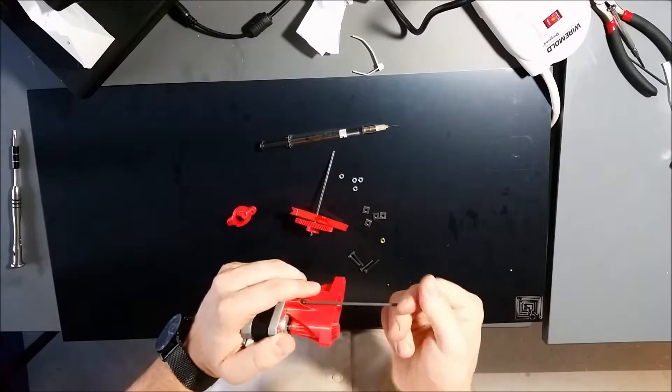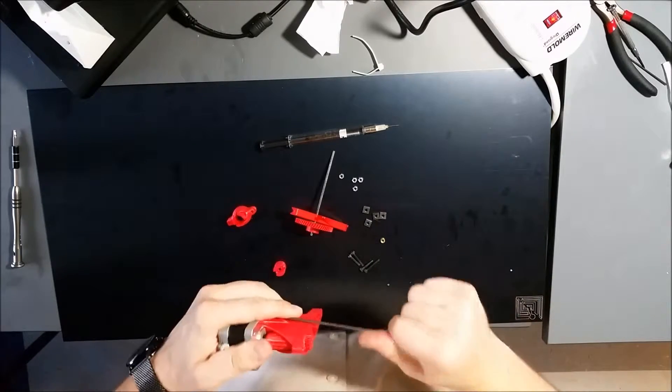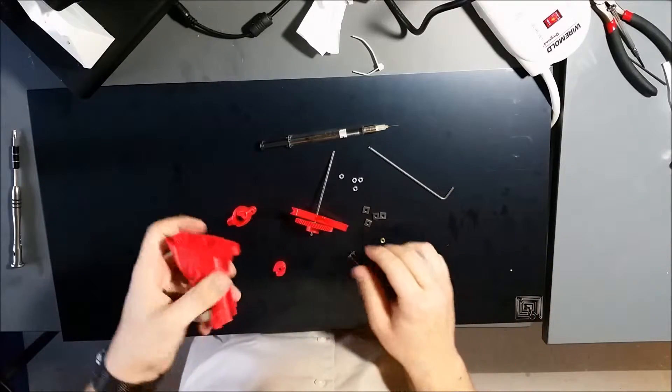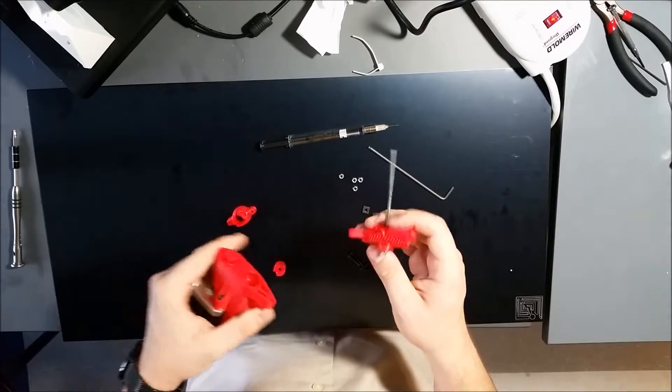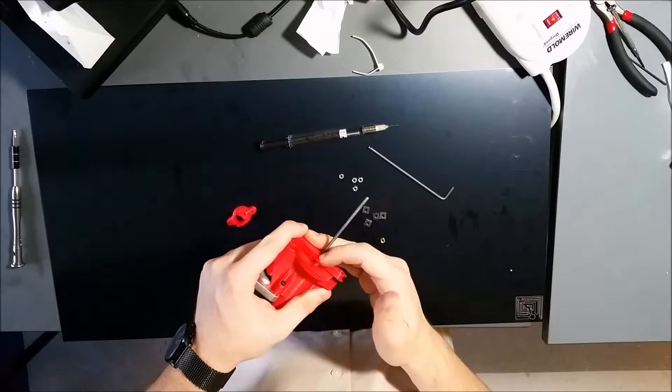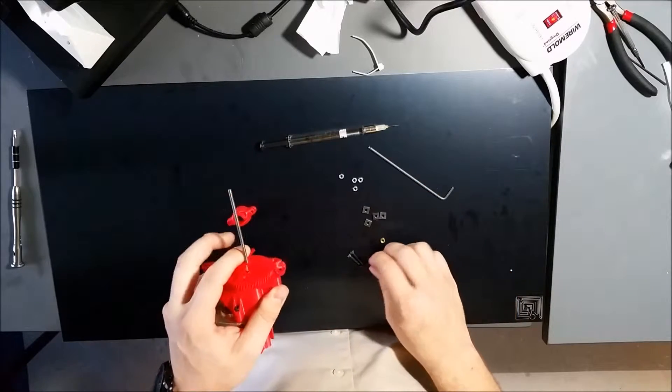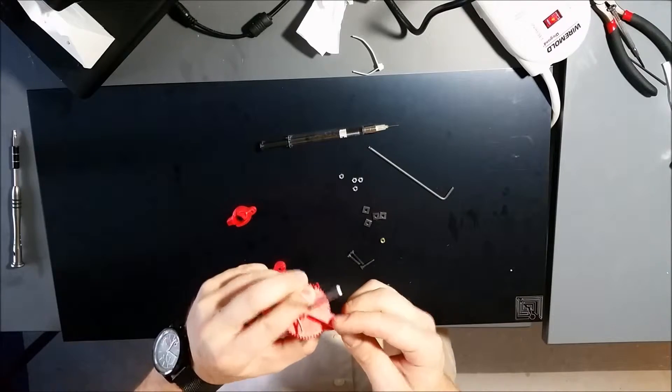what we're going to do is then take the top of the replostruder and put it on. This is really straightforward. You just attach it like this. Now you're going to need a couple of longer bolts to attach this top piece.